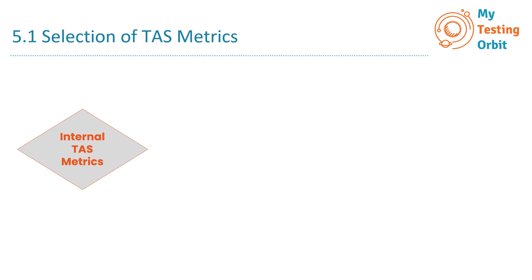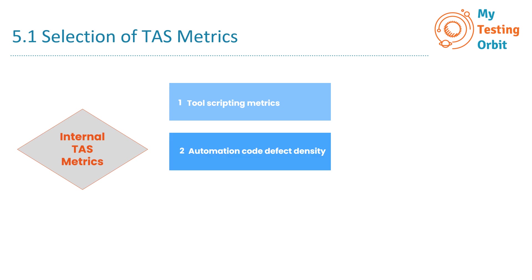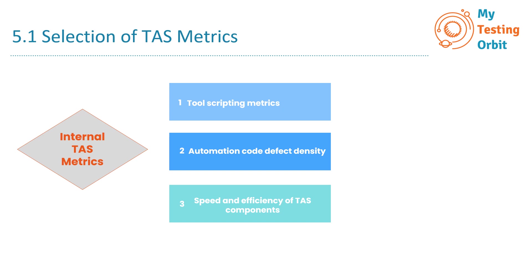Similarly, we have a list of internal TAS metrics. The first one is tool scripting metrics, the second is automation code defect density, and the third is speed and efficiency of TAS components.